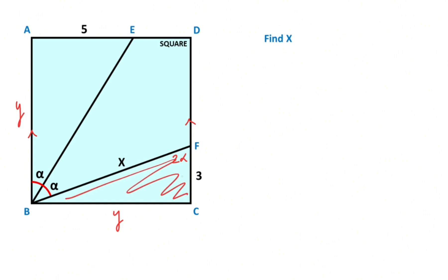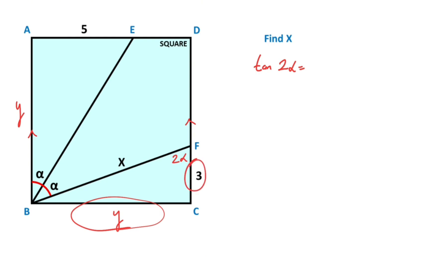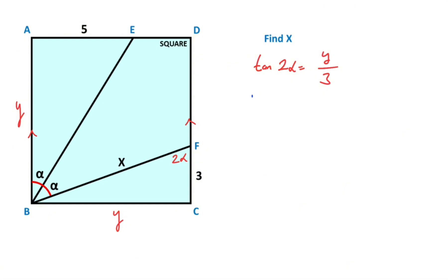For this triangle, if we apply tangent to alpha, tangent of alpha equals y over 3. We know that the double-angle expression of tangent of 2-alpha equals 2 times tangent alpha over 1 minus tangent squared alpha.